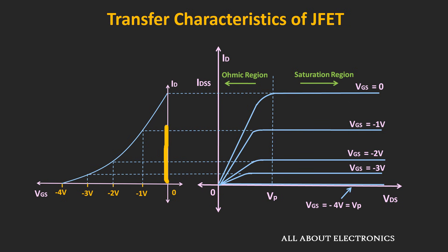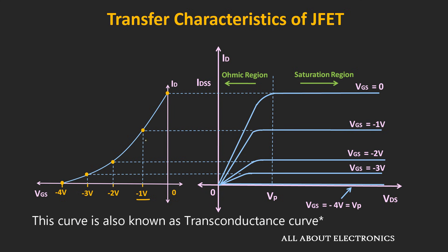The intersection of these two lines will give the value of drain current Id for Vgs is equal to 0V. And we can do the same thing for the different values of Vgs. So for Vgs is equal to minus 1, if we extend this line to the left, and if we draw our vertical line for Vgs is equal to minus 1V, then we will get an intersection point which represents the value of drain current for Vgs is equal to minus 1V. And if we do the same thing for the different drain curves, then we will get the values of drain currents for the different values of Vgs. And if we connect these intersection points, then we will get a transfer curve which represents the relationship between the current Id and the Vgs. And as it is evident from the graph, the relationship between this current Id and the Vgs is non-linear.